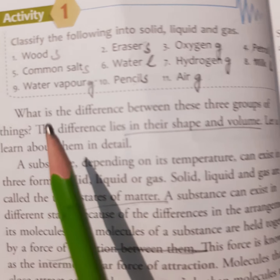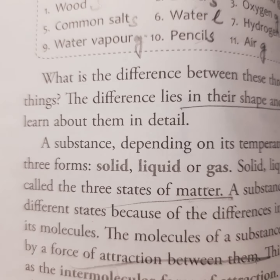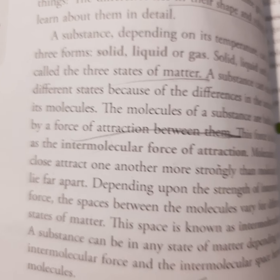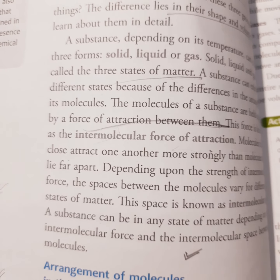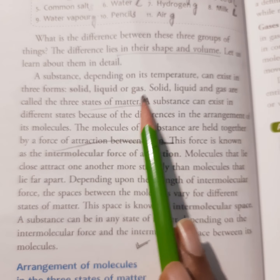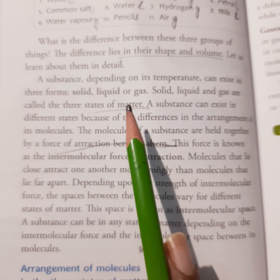Now a question arises: what is the difference between these three groups of things? The answer is the difference lies in the shape and volume. A substance depending on its temperature can exist in three forms — solid, liquid or gas — which are called the three states of matter.